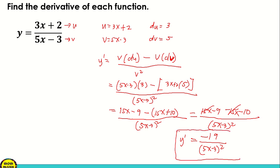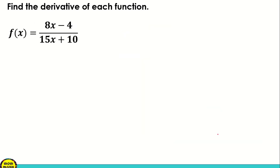I hope you followed how to apply the quotient rule. So I'll give you another example. f of x is equal to 8x minus 4 over 15x plus 10. So again, the first thing we're going to do is to identify our u and v. The u is always the numerator, which is 8x minus 4, and the v is the denominator, which is 15x plus 10.